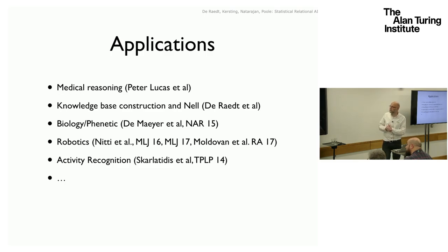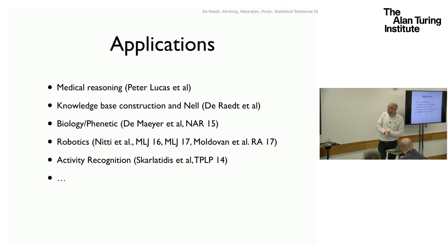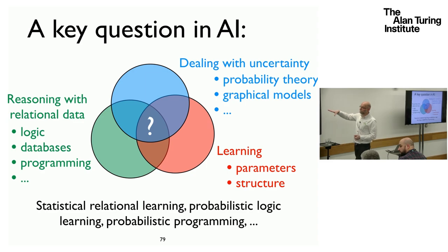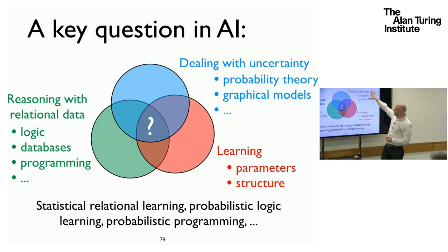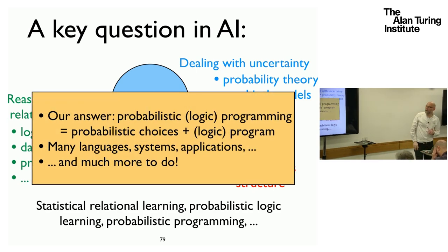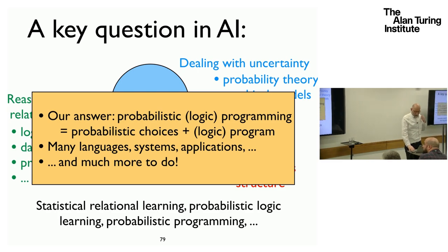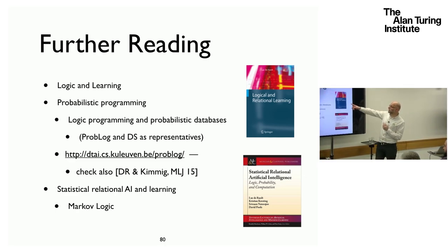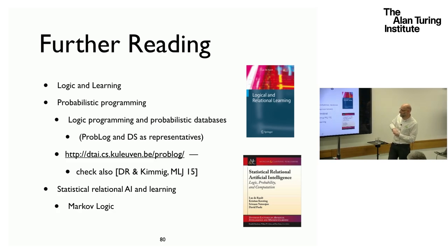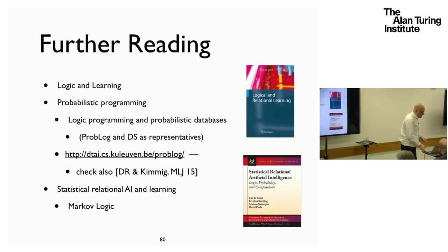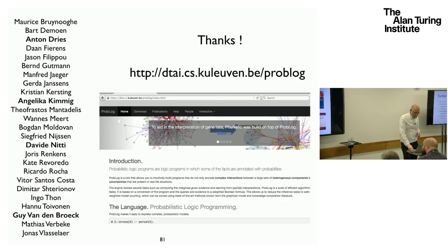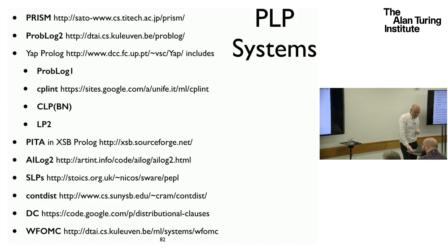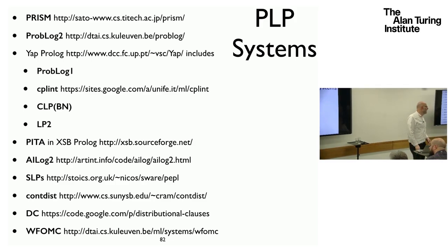I'm at the end of the talk. There are more applications: people have looked at medical reasoning and activity recognition, among many others. To summarize, I've looked at combining logic with probability and with learning — specifically a logic programming framework combined with directed graphical models. For further reading on logic and learning, I'd recommend my old book; for probabilistic variations, the new book with Christian, Sriram and David; and there is also a dense survey paper in the Machine Learning Journal from 2015. Thank you to all my collaborators, the most important ones for this talk being in bold, and there are also many other systems available in this area.